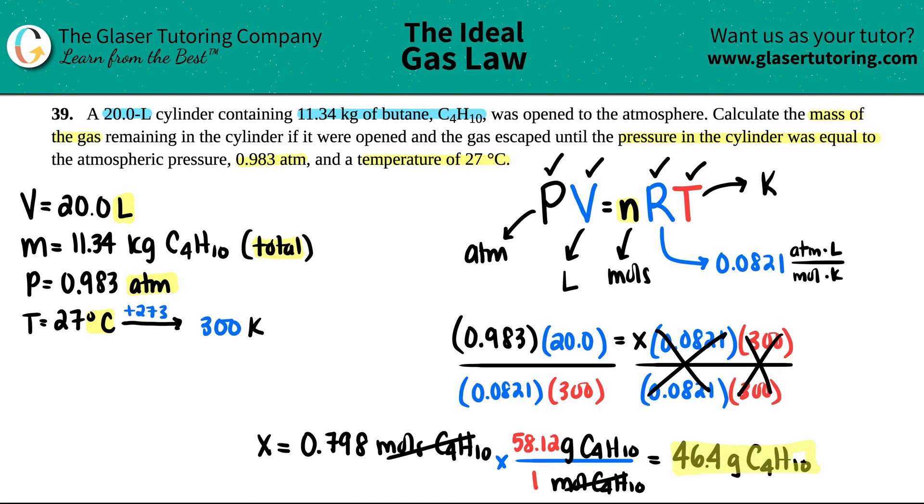Now this one, the wording is a little bit tricky, right? They said, calculate the mass that was remaining in the cylinder if it was opened and the gas escaped until the pressure of the cylinder was equal to this pressure and this temperature. This amount of moles is what is in the cylinder. That's the amount that's remaining. So there's 46.4 grams of C4H10 that is remaining. So did we need to know how much was at the beginning? No, but if the question asked for calculate the mass that left, then you would have to take these two values and subtract them and then make sure that this was in grams because you can't subtract kilograms from grams.